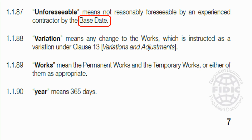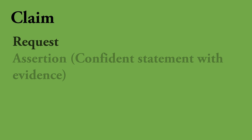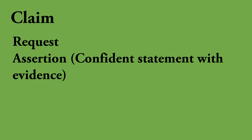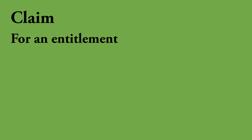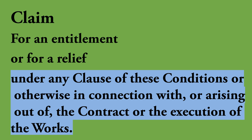Now we'll move on to the next definition: 'claim'. This is a very popular term in the construction industry. A claim can be defined as a request or an assertion — a confident statement with evidence — from either party of the contract to the other, for an entitlement. If you are the contractor, this could be for additional payment or an extension of time; if you are the employer, a cost reduction. You can also submit a claim for a relief, such as relief from delay damages or some kind of penalty. You can initiate a claim under various circumstances as described in this document, and we will discuss those under the relevant clauses.